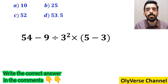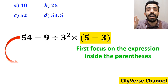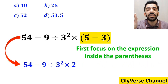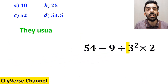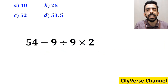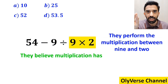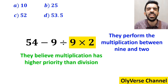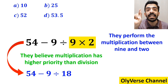Also, some other people when solving this question first focus on the expression inside the parenthesis, and replace the whole expression with 54 minus 9 divided by 3 squared, then multiply by 2. And the next step, they usually go to the exponent and simplify it to 54 minus 9 divided by 9, then times 2. Then they perform the multiplication between 9 and 2, because they believe multiplication has higher priority than division. So they rewrite this expression as 54 minus 9 divided by 18.